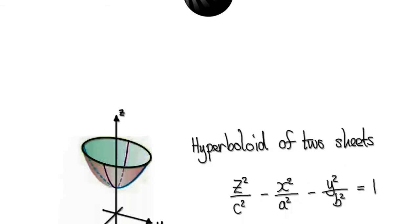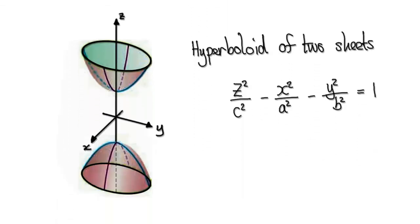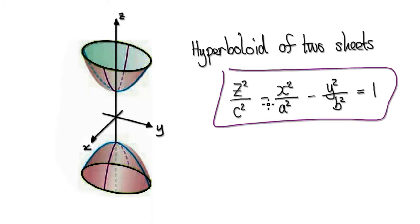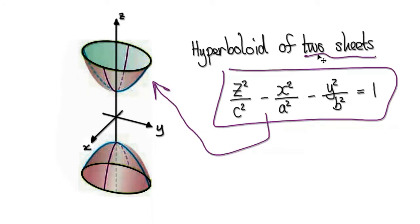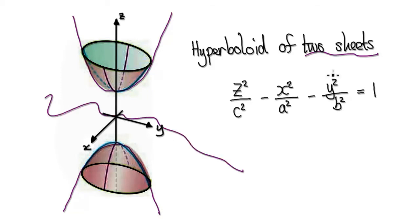In this video, we're going to try and understand why an equation of this form will yield a hyperboloid of two sheets. Two sheets meaning you've got one sheet here and another separate sheet down here, and they're disconnected — that's why it's called two sheets.